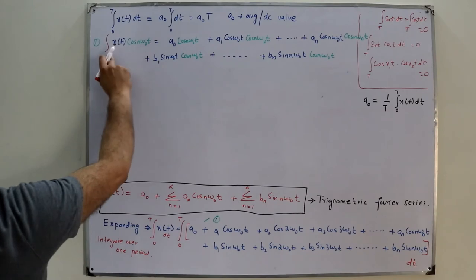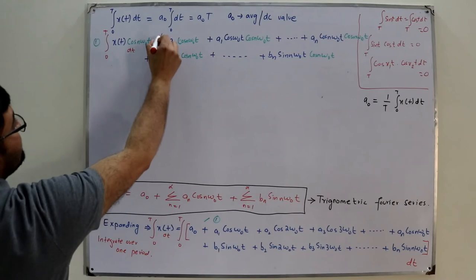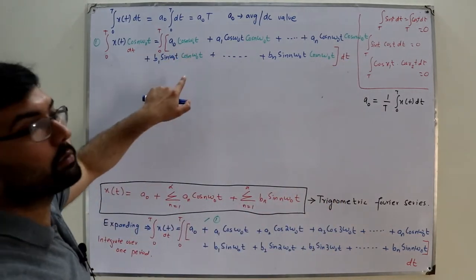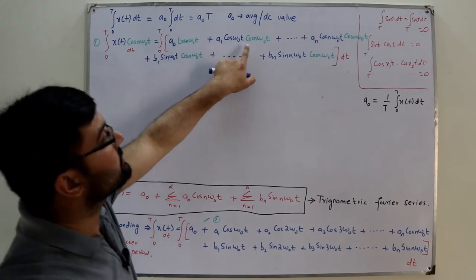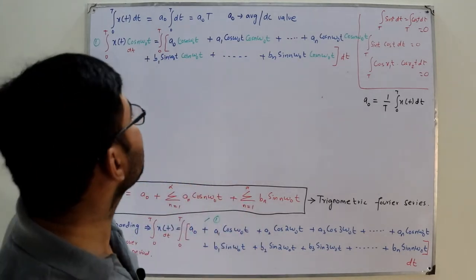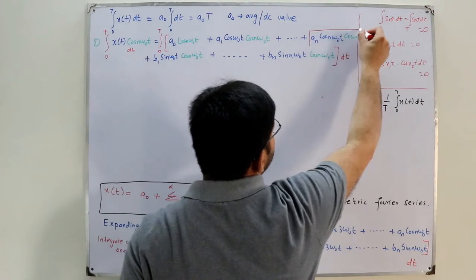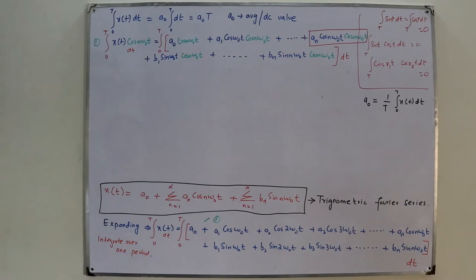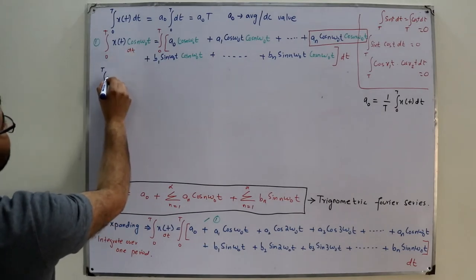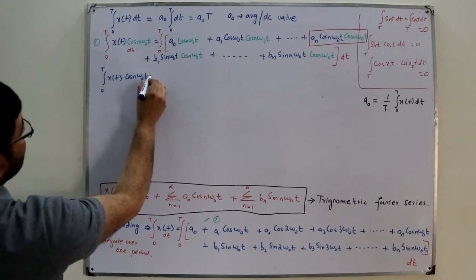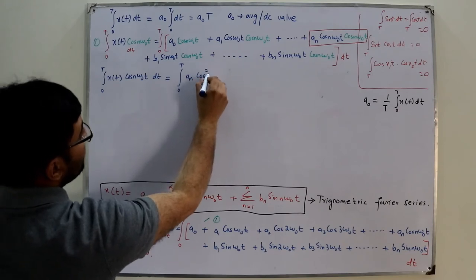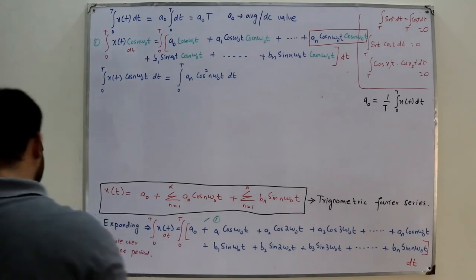Now integrate over one period, from 0 to T. a₀ comes outside and cos(nω₀t) over one period is 0. a₁ times cos of one frequency multiplied by cos of another frequency integrates to 0. Sine times cosine integrates to 0. The only non-zero term is aₙ·cos(nω₀t)·cos(nω₀t), which is aₙ·cos²(nω₀t). The cos squared integration is not zero.